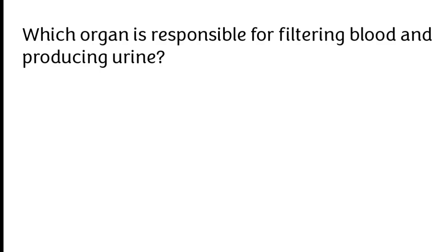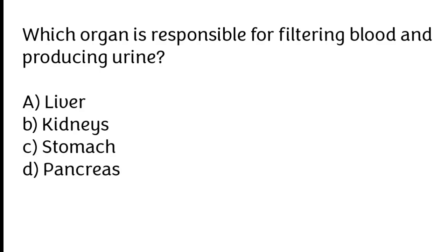Which organ is responsible for filtering blood and producing urine? A) Liver, B) kidneys, C) stomach, D) pancreas.